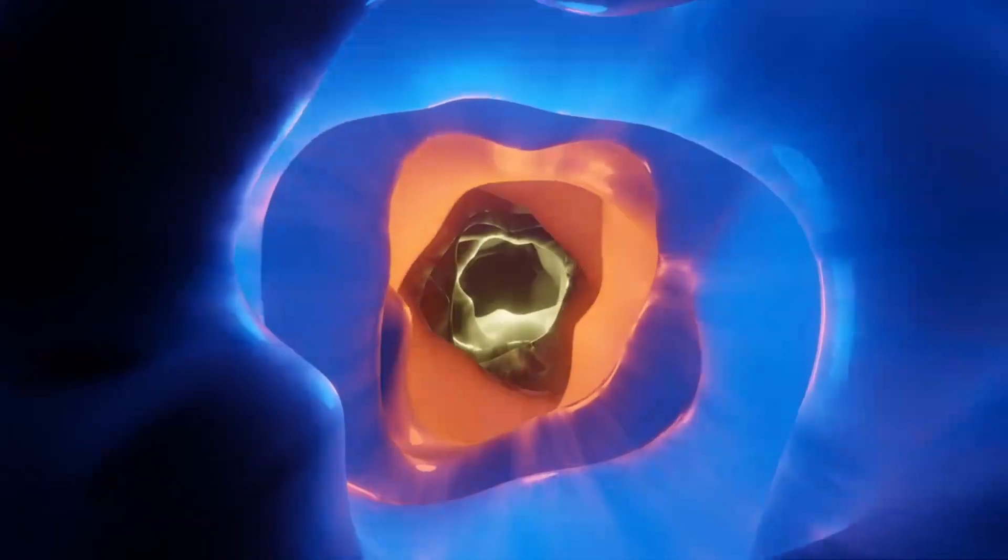Essentially, when a giant star dies, it leaves behind a dense core. If this core's mass is several times that of the sun, gravity overwhelms everything else, leading to the formation of a black hole.